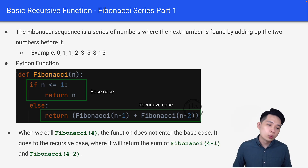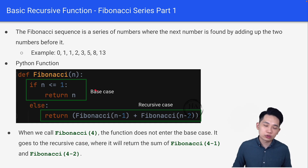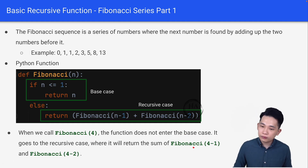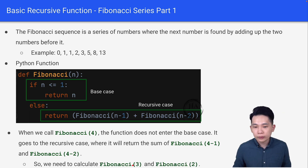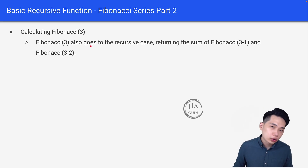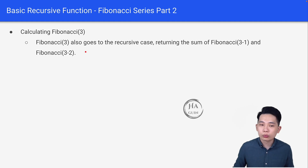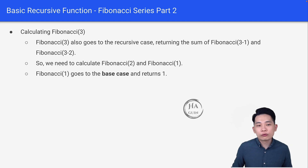Now let's look at an example to understand better with a quick walkthrough. When we call Fibonacci(4), the function does not enter the base case because N is more than 1. It goes to the recursive case, returning the sum of Fibonacci(4 minus 1) and Fibonacci(4 minus 2), which means we need to calculate Fibonacci(3) and Fibonacci(2). Calculating Fibonacci(3) also goes to the recursive case, returning the sum of Fibonacci(2) and Fibonacci(1). Remember that Fibonacci(1) goes to the base case and returns 1.